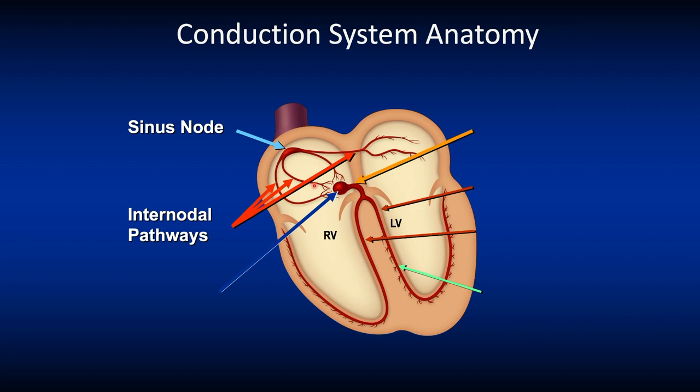You have the Middle Internodal Pathway which arises along the Endocardial Surface of the Sinus Node and descends through the Intra-Atrial Septum to the AV Node. You also have the Posterior Internodal Pathway which arises from the Caudal End of the Sinus Node and approaches the AV Node at its Posterior Aspect.